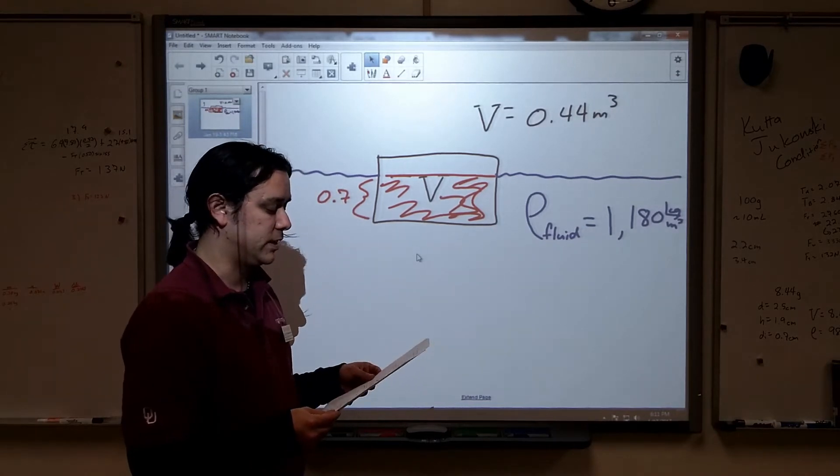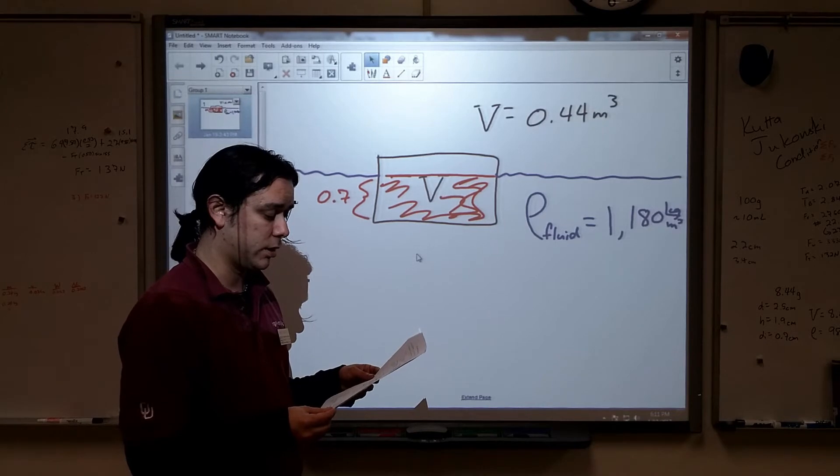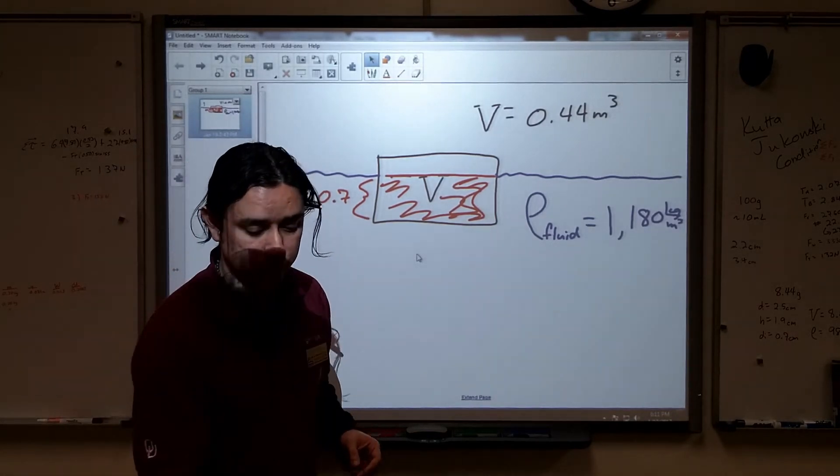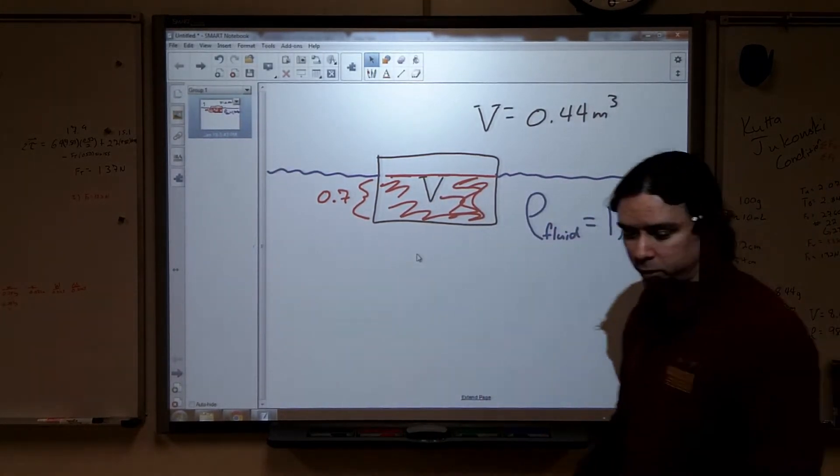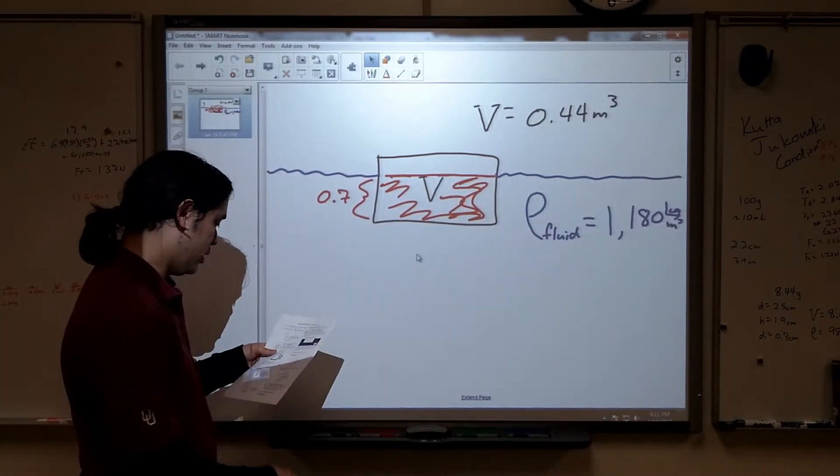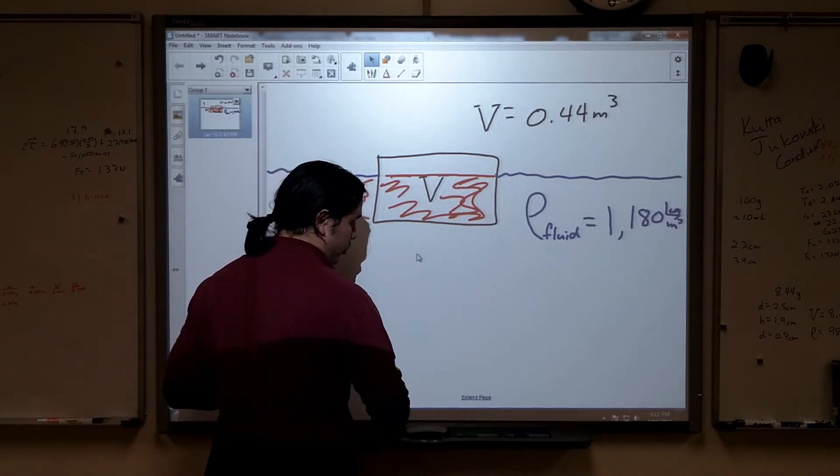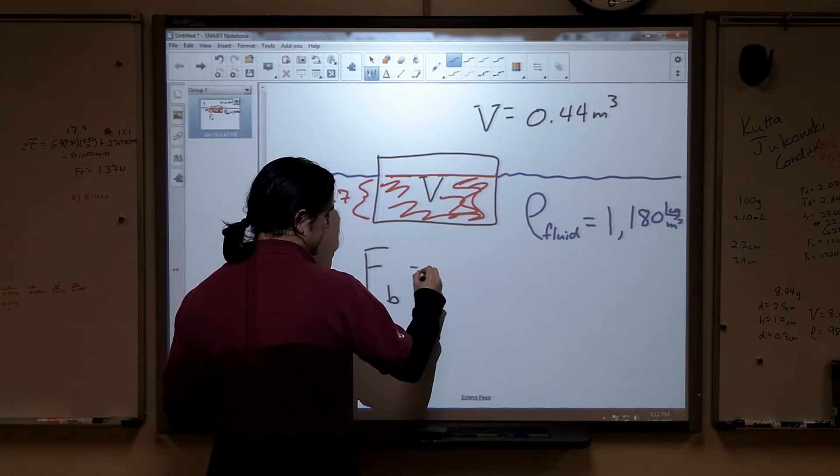The problem is asking, what's the magnitude of the buoyant force on the block? The acceleration of gravity is 9.8 meters per second squared. I can't believe I forgot my calculator. Trusty tool. All right. They want to know what the buoyant force is. Well, if we're looking for a buoyant force, we probably want to use the equation for buoyant force, which I introduced in class.